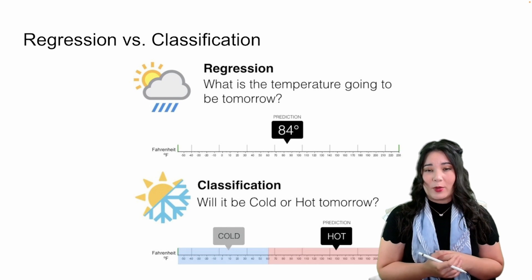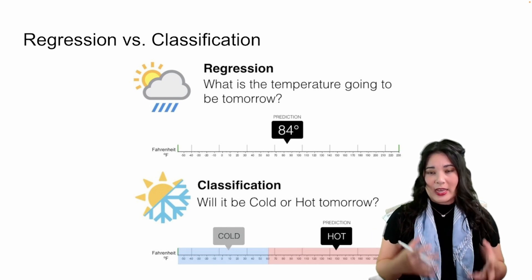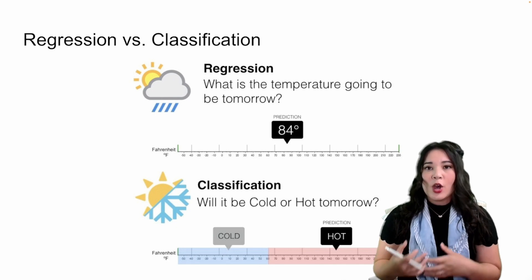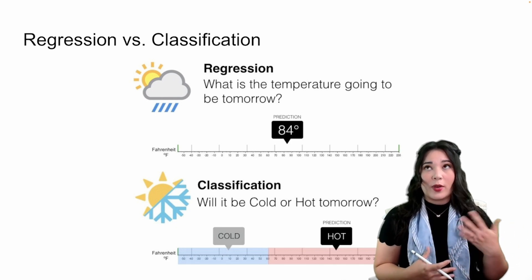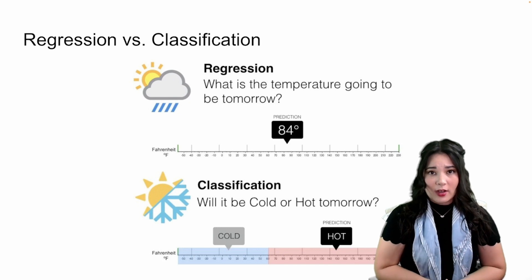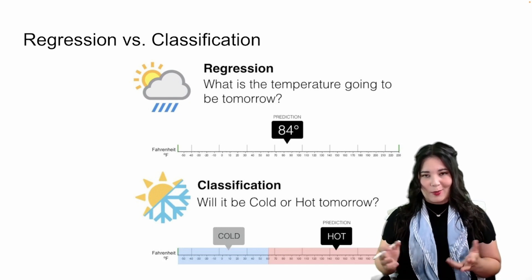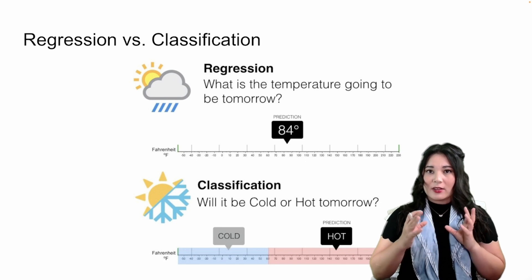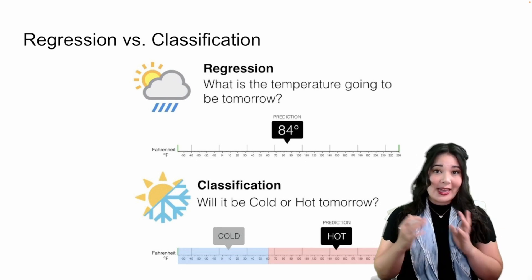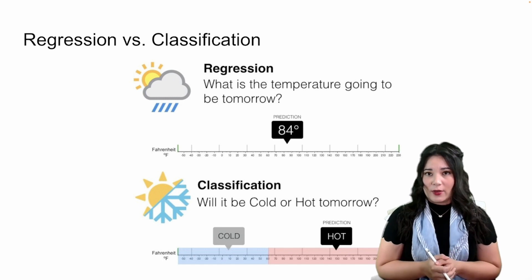The other thing we might want to do is classification. This is where we take a model and try to guess a category, like whether or not it's raining, whether or not someone's registered to vote, or what someone's favorite color is. Logistic regression, despite the name regression, is actually a classification model, so we are going to be predicting categories rather than a continuous value.